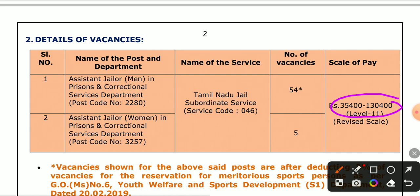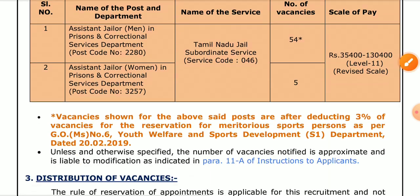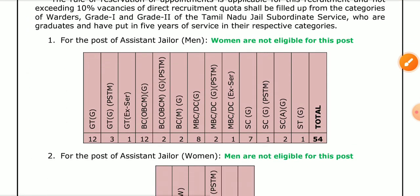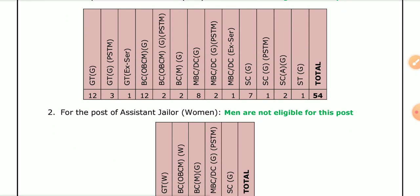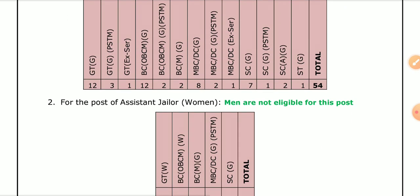How many vacancies are there? There are 54 vacancies. This is a very good concentration. This is a scale pay. This is a Group 2 category level. This is an education qualification. This is a total of 54 vacancies — this is a category distribution of vacancies.